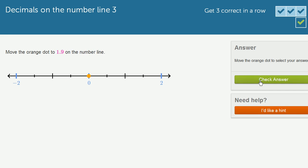Let's do a couple more of these. Move the orange dot to 1.9 on the number line. So it seems like we have the same scale as in the previous example. This gets us to 1. In fact, this is 0.5, 1, 1.5.